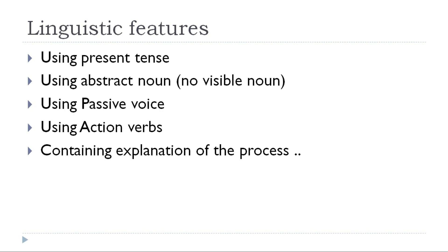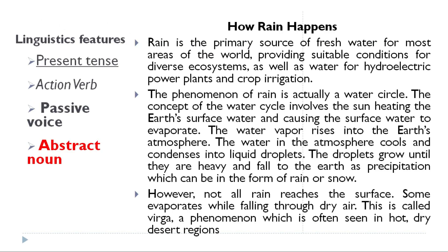The linguistic features of explanation text are: it uses present tense, abstract nouns, passive voice, and action verbs, and it contains explanation of the process. Now let's go to the example.